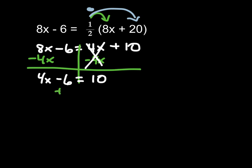Now I need to get my x alone on the side, so I'm going to get rid of this 6 by adding 6, doing the opposite operation. I'm going to add 6 over here. I have 4x remaining on this left-hand side, because negative 6 and positive 6 make 0, and 10 plus 6 is 16.